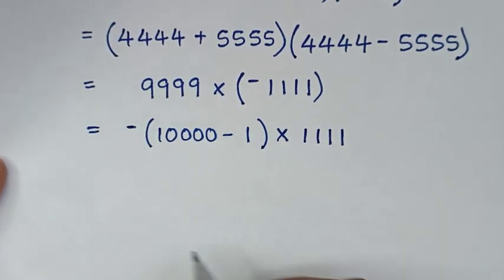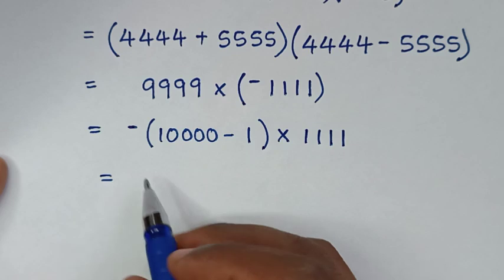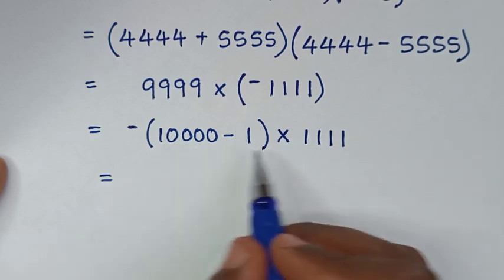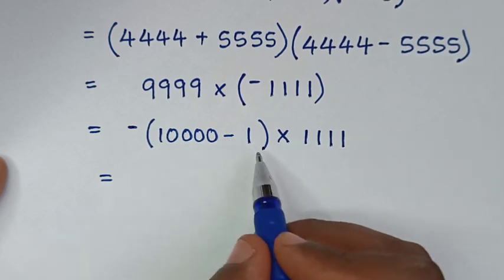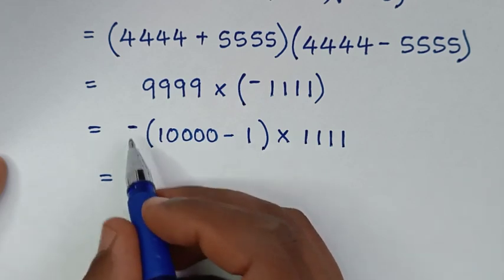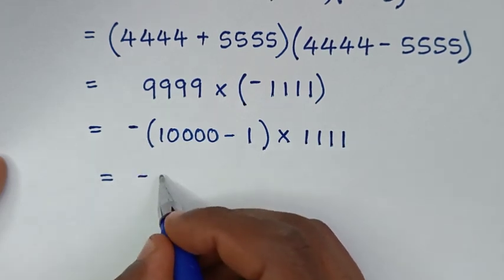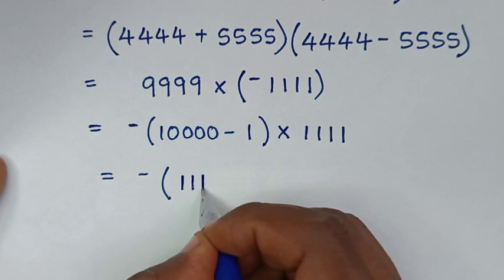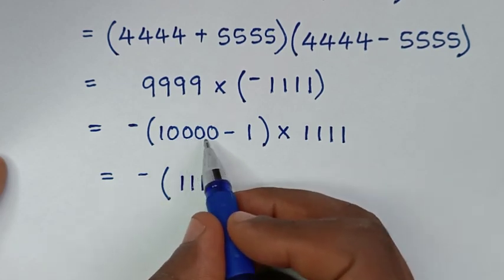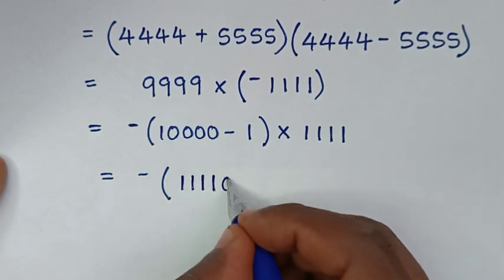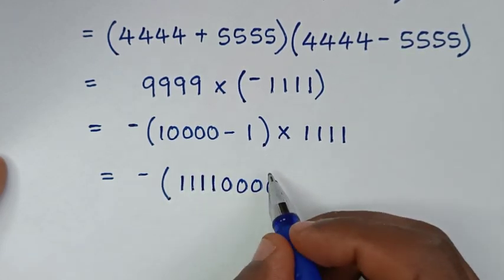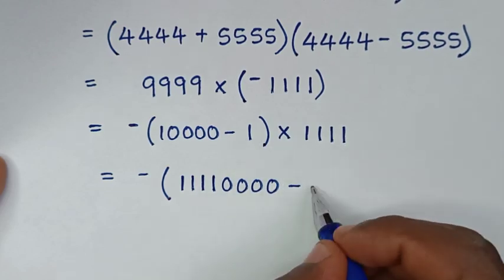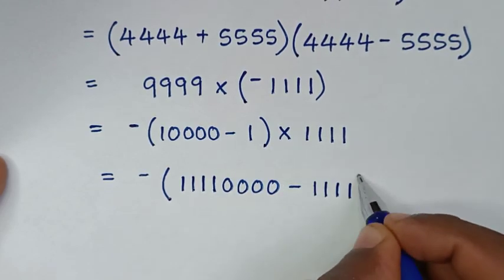In the next step, we'll take 1,111 inside the bracket. So it multiplies both terms: negative bracket. This times this gives 11,110,000, then minus 1,111 times 1 gives 1,111.